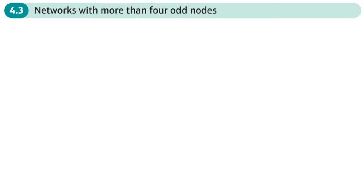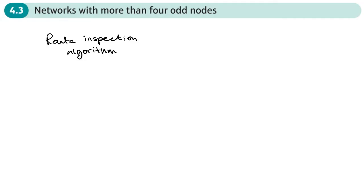This is the third and final section of the root inspection chapter, and here we're going to be looking at networks that have more than four odd nodes. You'll remember from the last section, when we used the root inspection algorithm, part of that was pairings - pairing together all of the odd nodes. Once you had identified the odd nodes, then you did the pairings.